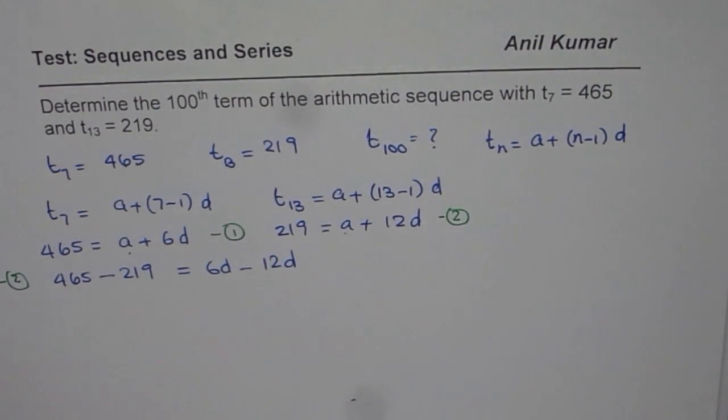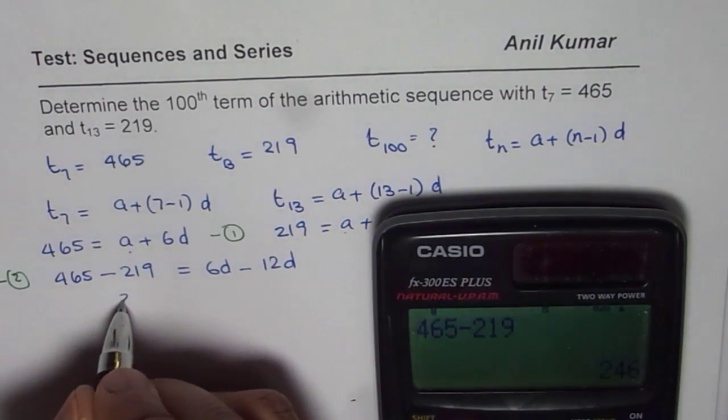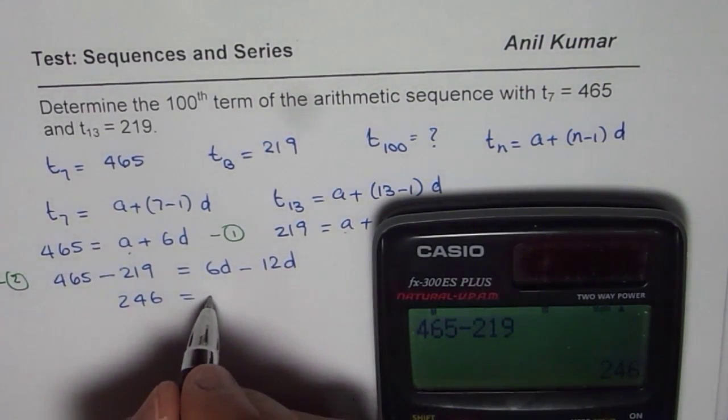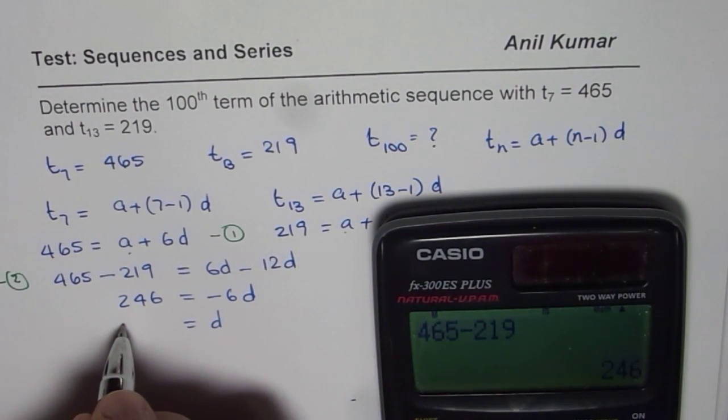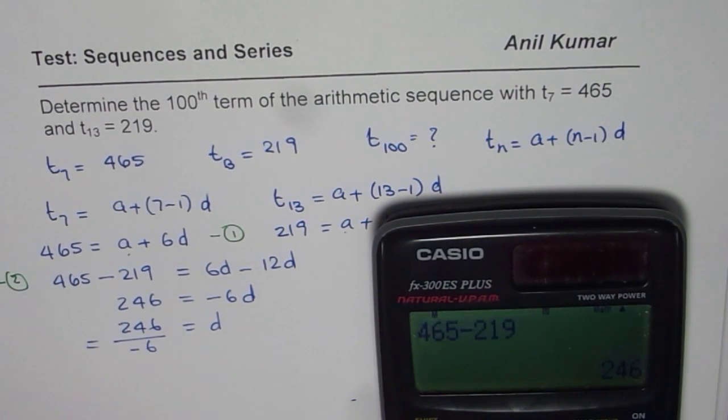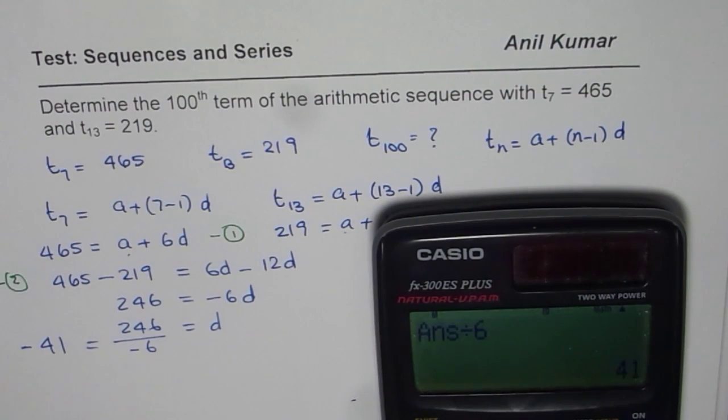Let us use our calculator. We have 465 minus 219 equals 246. So we get 246 equals 6 minus 12, we can write minus 6D. And from here, D equals 246 divided by minus 6. So if I divide 246 by 6, I get 41 with a negative sign. So minus 41 is the value of D.